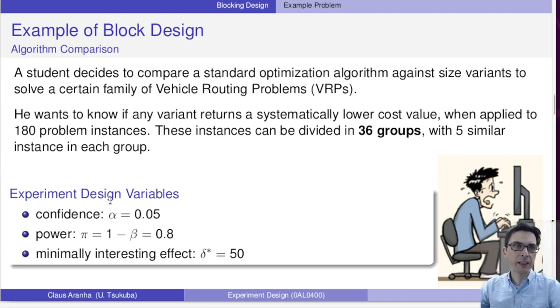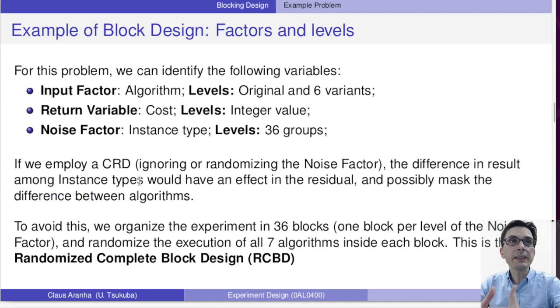When we think about that experiment design, we have variables: confidence, power, and the minimum intensity effect that the student wants to use. In this problem, let's identify the variables of interest. The input factors are the algorithms and the levels are the original form of the algorithm and six variants. The return variable is the cost of the algorithm and the levels are the integral value of the cost. Finally, we have the noise factor which is the instance types, and the levels are the thirty-six different instance types that we have.